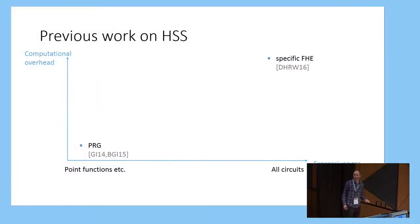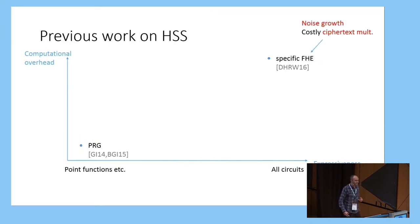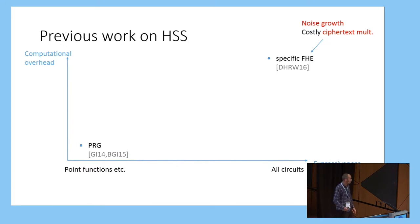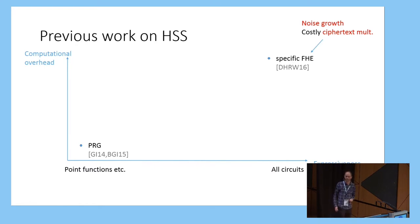At the other end of the scale, we know that we can get homomorphic secret sharing for arbitrary circuits by building on top of specific kinds of fully homomorphic encryption based on lattice-based assumptions. But as with FHE generally, these have a very high computational overhead. In particular, you either need some expensive bootstrapping procedure, or if you avoid this, then you have some kind of noise growth which increases during the computation, and the ciphertext multiplication procedure gets more expensive to handle this.